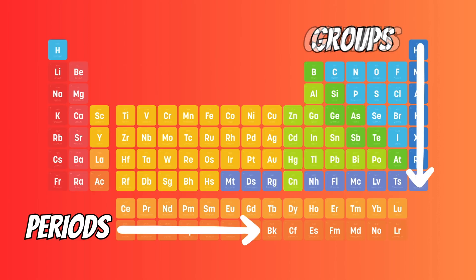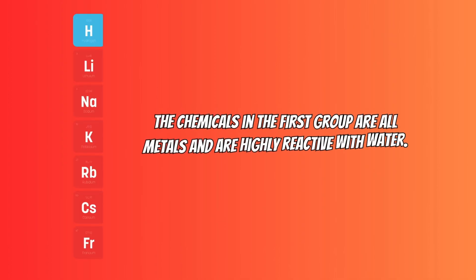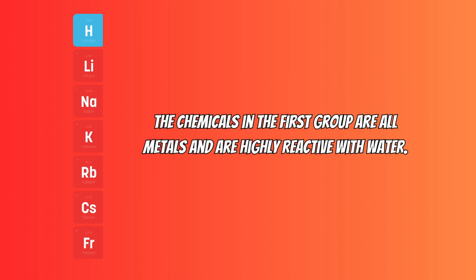The columns are called groups, and the elements in the same group have similar chemical properties. For example, the elements in the first group, like lithium, sodium, and potassium, are all metals and share similar behavior.